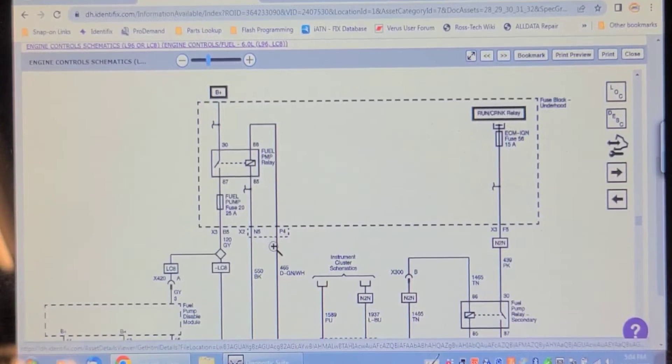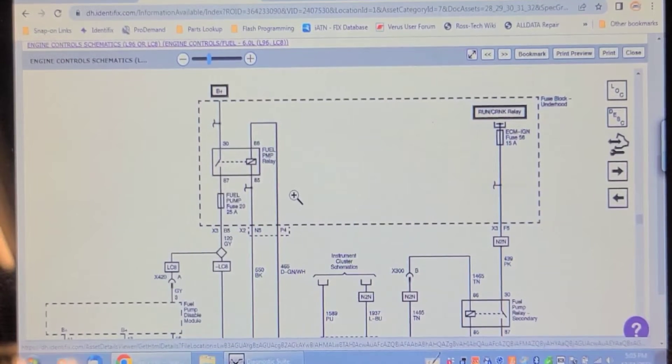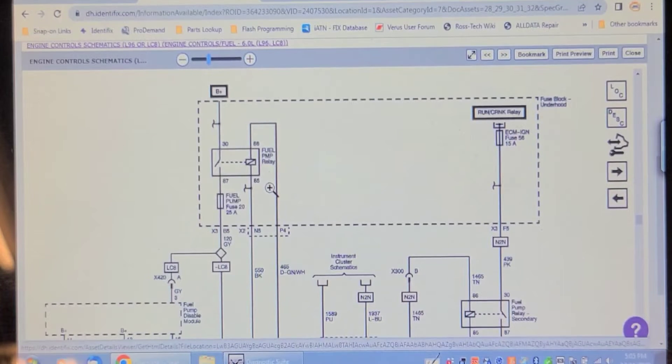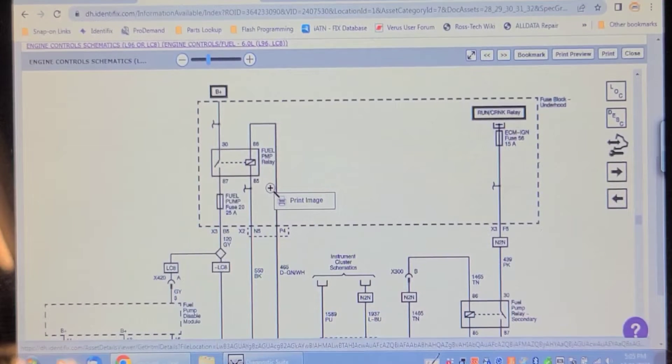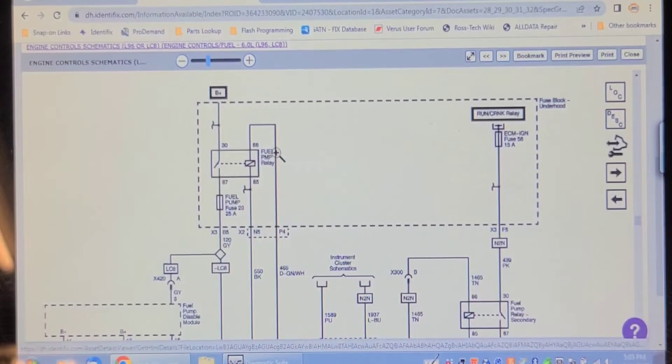As far as I can tell, there's either a short to voltage on circuit 465 here, or there's a problem with the under hood fuse block. I looked at a 15, 16, and a 17 today with 5.3 liter engines and they all have this relay in them. None of them made a difference when I pulled the relay out while it was running.